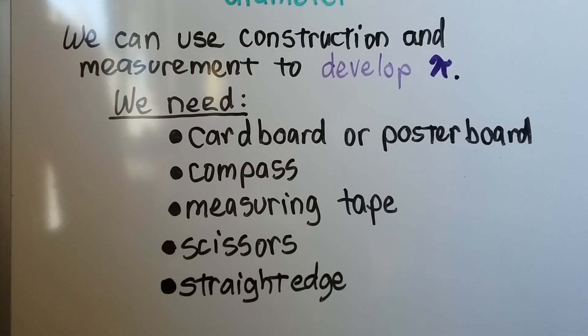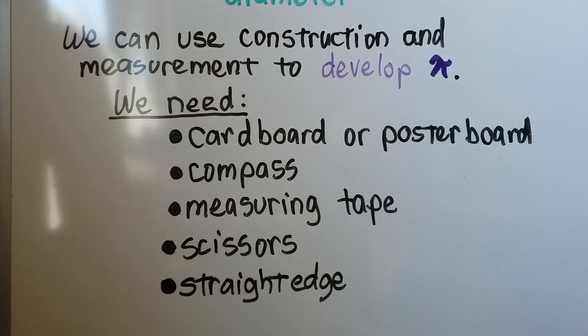Here's what we're going to need. We can use construction and measurement to develop pi. We need cardboard or poster board, a compass, a measuring tape, scissors, and a straight edge.